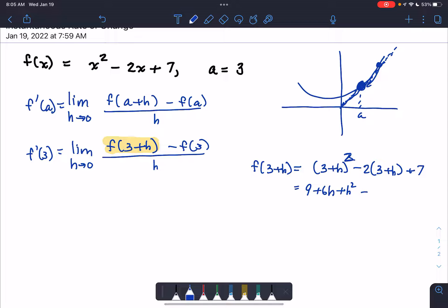And if we combine like terms that will be h squared plus 4h, 9 minus 6 is 3 plus 7 is 10. So that's going to go in to the limit here.